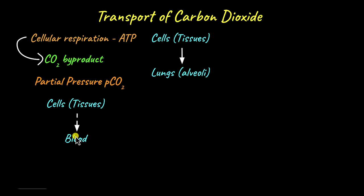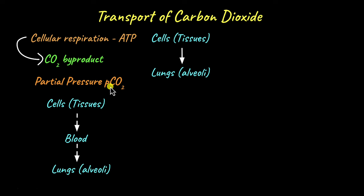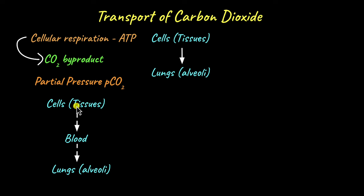And compared to the blood, the partial pressure of carbon dioxide is going to be even less within the lungs, in the alveoli. So the partial pressure of carbon dioxide is greatest in the cells and tissues and least in the alveoli. This makes sense because this is the direction in which carbon dioxide needs to move to be exhaled out of the body, and gases flow from a region of higher pressure to a region of lower pressure.